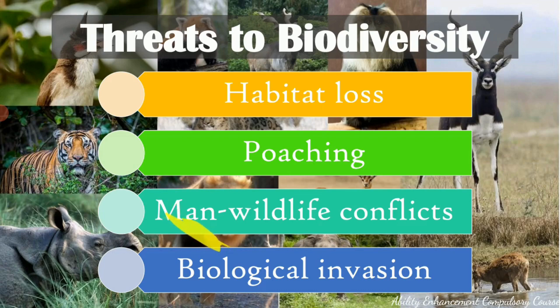The third reason is man-wildlife conflict. Man and wildlife have been in conflict due to many limitations on resources — limitation on food, water resources, and habitat. Due to all of these reasons, wildlife and man have been in a perpetual conflict, and that is a big reason for loss of biodiversity. When wildlife enters human settlements, humans retaliate and there is a lot of revenge killing, or they trap the animals, leading to animals being moved out from their natural habitat.